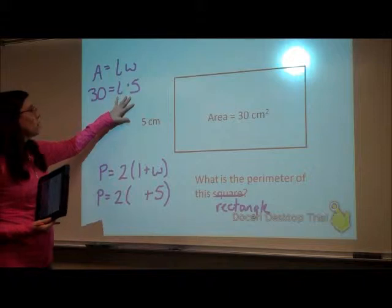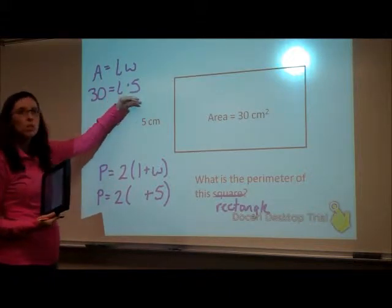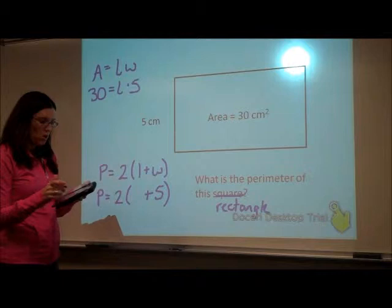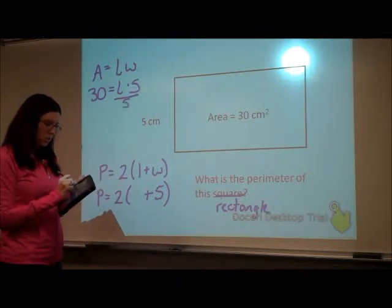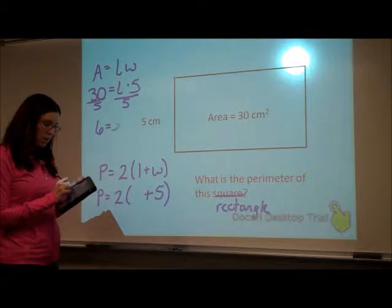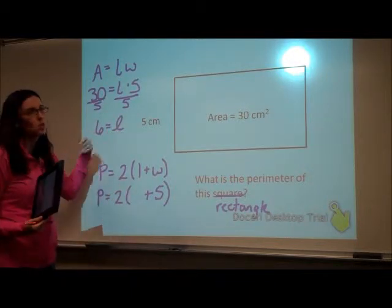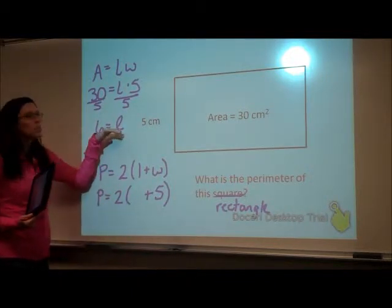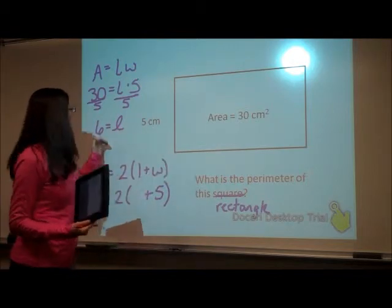So I'm looking for what number times 5 gives me 30. Well, solving this equation, I get that the length, I'm going to write that cursive so it's a little easier to see, the length of this rectangle is 6.